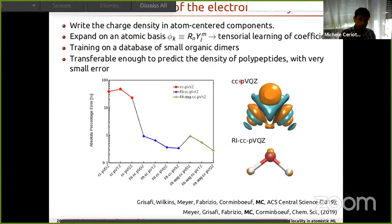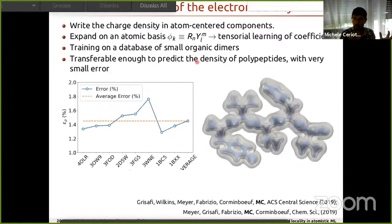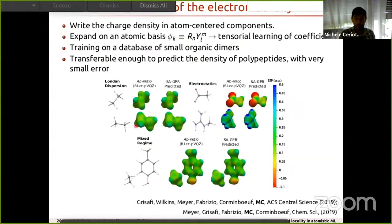This tensorial scheme can also predict the electron charge density. We train on the charge density of small molecules using an atom-centered expansion, predicting coefficients that transform like spherical harmonics. Thanks to the Lego-brick construction, we train on small compounds and make predictions for full proteins. We use this to predict the electrostatic potential on a protein surface — useful for modeling drug molecule binding — achieving ab initio accuracy without linear-scaling DFT.